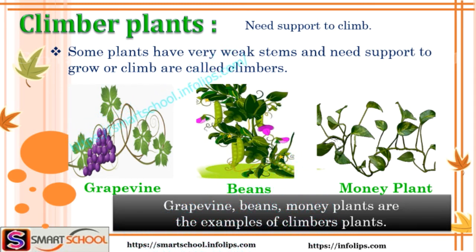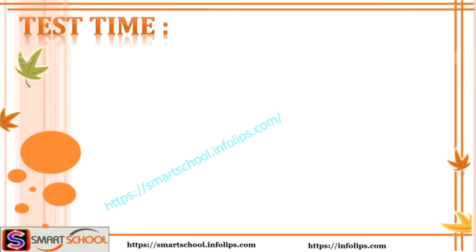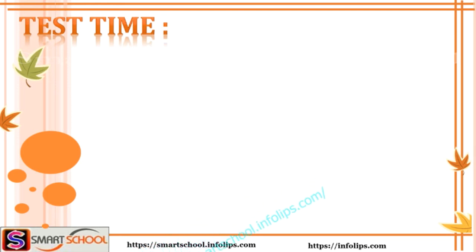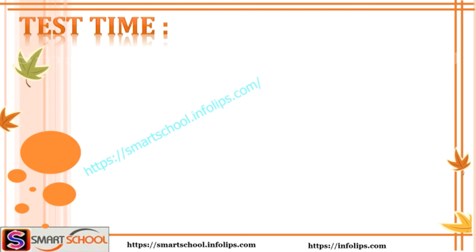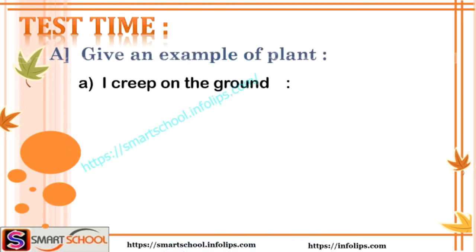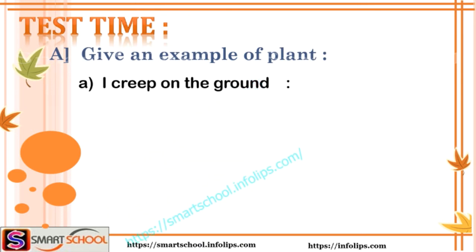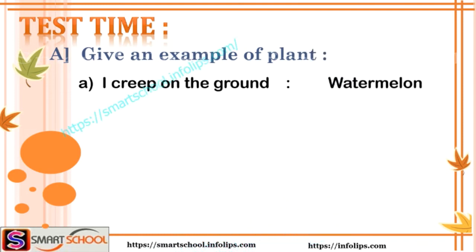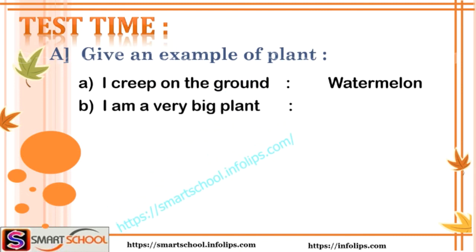Now we have seen the types of plants: big plants, small plants, creepers, and climbers. Now it's test time! Give an example of each plant type. Which plant creeps on the ground? Watermelon — it's a watermelon.